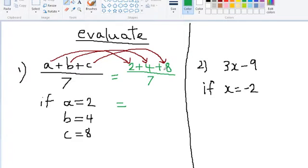Now we're going to add up the numerator. 2 plus 4 is 6 plus 8 is 14, all over 7. And 7 into 14 is 2. So our answer for number 1 is 2. As you can see, all the letters have disappeared and the resulting answer is a number.